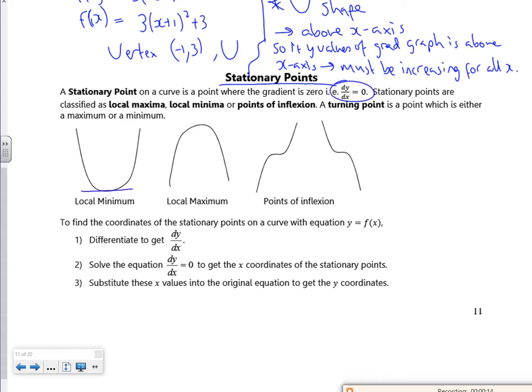So if you look, my gradient is zero there, so dy by dx is zero. And it's at the bottom of the graph so it's a minimum. Whereas here, dy by dx is zero, it's at the top of the graph so it's a maximum.